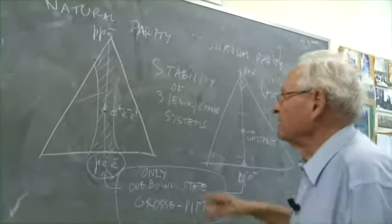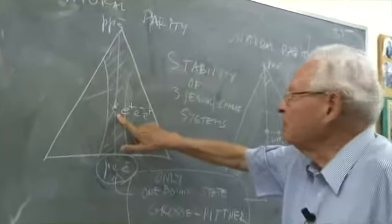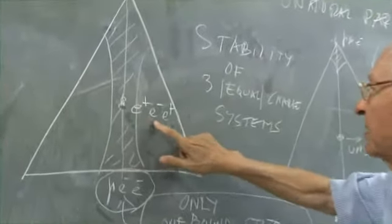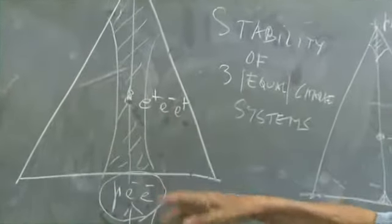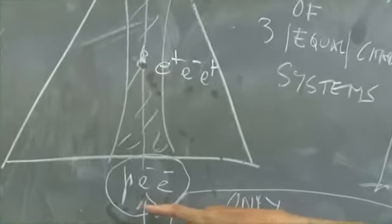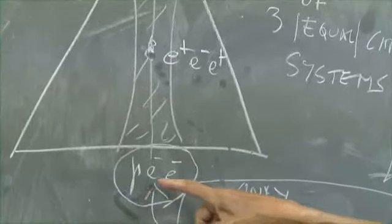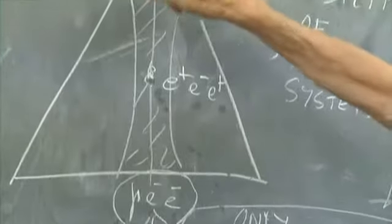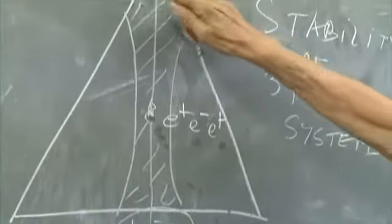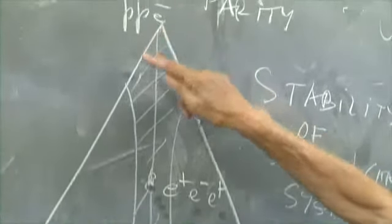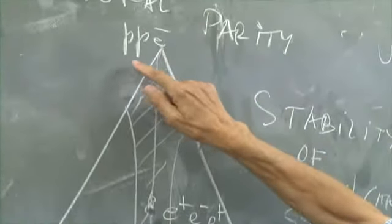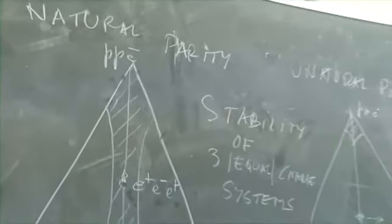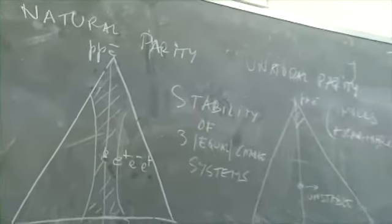In particular, there is this famous system discovered by Alan Mills: e-plus, e-minus, e-plus. There is the negative hydrogen ion: p, e-minus, e-minus. And there is the ionized hydrogen molecule, which is p-p-electron.